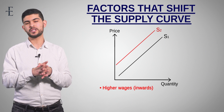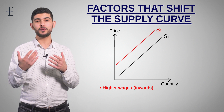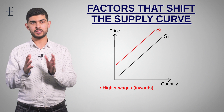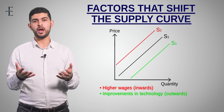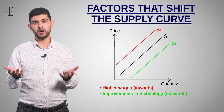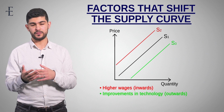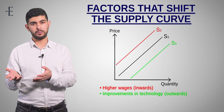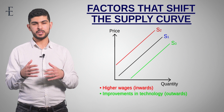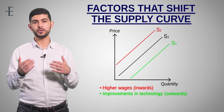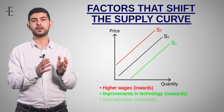Another factor that could shift the supply curve is improvements in technology, because if technology improves the quantity of units you're capable of producing is now higher, so the supply curve would shift outwards. Another thing that would shift supply is if your rent goes up or goes down — if it goes up you supply less, if it goes down you supply more. The final one is specialization. Specialization enables firms to produce at a higher volume because everyone is now so good at what they do, so the supply curve would shift outwards.